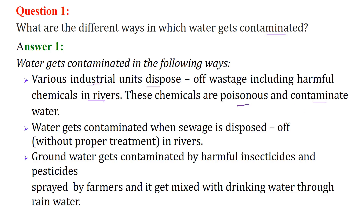Then the sewage from the cities — this sewage water gets contaminated when the sewage is disposed of without any proper treatment into the rivers. Then when we apply insecticides and pesticides on crops, due to rain it goes inside the groundwater and then we drink this water. This is how water gets contaminated.